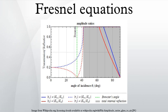The discussion here assumes that the permeability μ1 is equal to the vacuum permeability μ0 in both media, embodying the assumption that the material is non-magnetic. This is approximately true for most dielectric materials, but not for some other types of material. The completely general Fresnel equations are more complicated. For low-precision applications where polarization may be ignored, such as computer graphics, Schlick's approximation may be used.